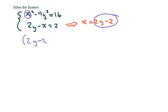So we get (2y minus 2) squared minus 4y squared equals 16, and then I'm going to use my properties. We get 4y squared minus 8y plus 4, and then minus 4y squared equals 16.